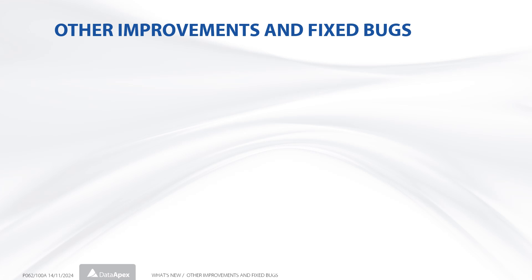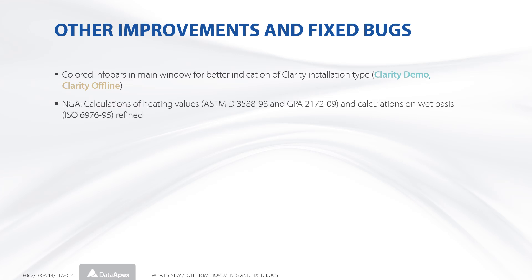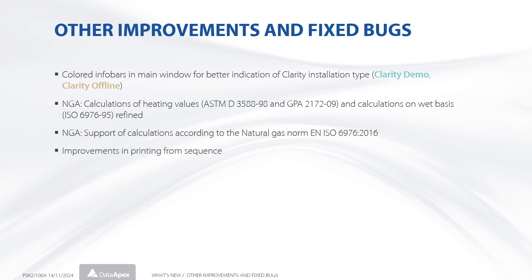Clarity 10.0 also includes other changes, such as new colored info bars that easily indicate the Clarity installation type, improvements in NGA calculation and support for calculation according to a new norm, improvements in printing from the sequence, and a lot more.